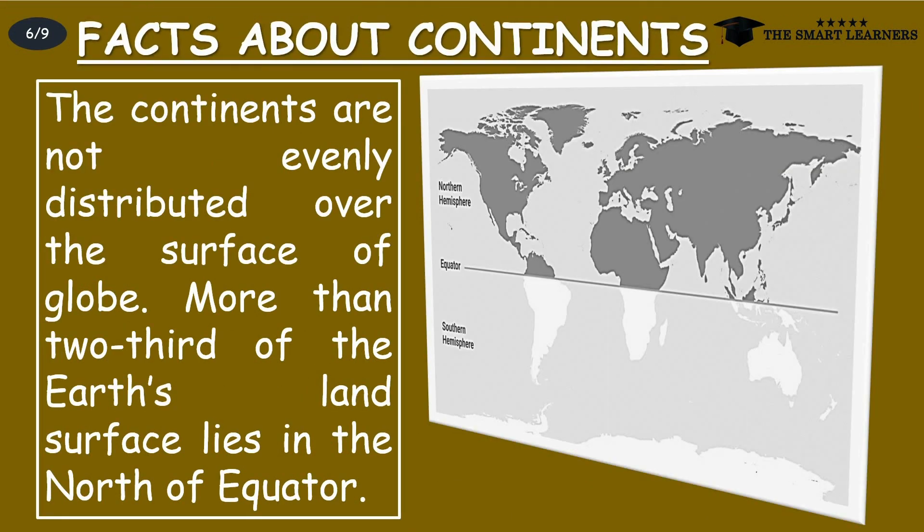The continents are not evenly distributed over the surface of the globe. More than two-thirds of the Earth's land surface lies north of the equator.